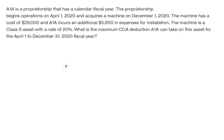I want to show you how to answer this problem. A1A is a proprietorship that has a calendar fiscal year. The proprietorship begins operation on April 1, 2020 and acquires a machine on December 1, 2020. The machine has a cost of $29,000 and A1A incurs an additional $5,800 in expenses for instruments. The machine is a Class A asset with a rate of 20%. We need to find the maximum CCA deduction A1A can take on this asset for the April 1 to December 31, 2020 fiscal year.